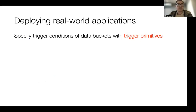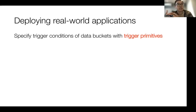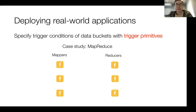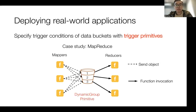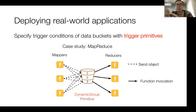Next, I'd like to show how the data-centric design benefits real-world applications. We provide a rich set of trigger primitives to let developers easily specify the trigger conditions for each data bucket. Let's take the example of MapReduce again. We have a primitive called dynamic group. The dynamic group trigger primitive can dynamically partition the data in the bucket into multiple groups and let each data group trigger a function. This primitive is well suited for running MapReduce.